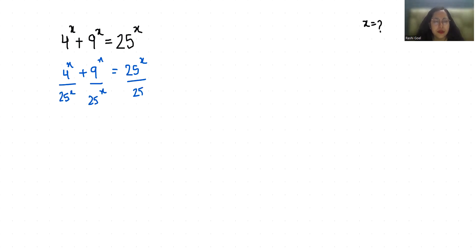So it becomes 4, I can write it as (2²)^x divided by (5²)^x plus (3²)^x divided by (5²)^x equals 1. So 2^(2x) divided by 5^(2x) plus 3^(2x) divided by 5^(2x) equals 1.